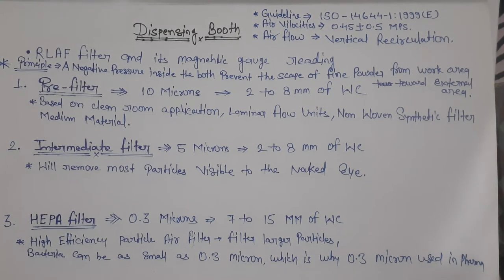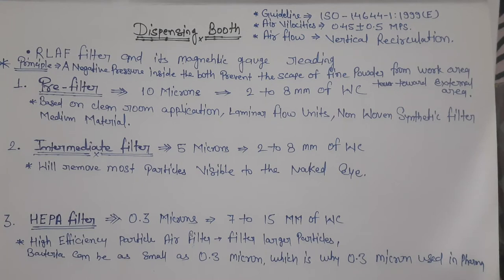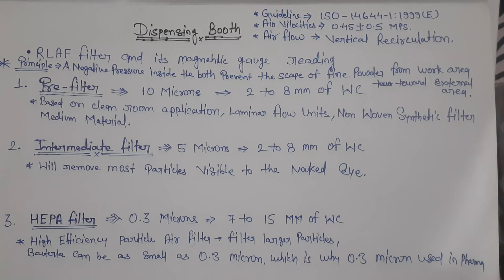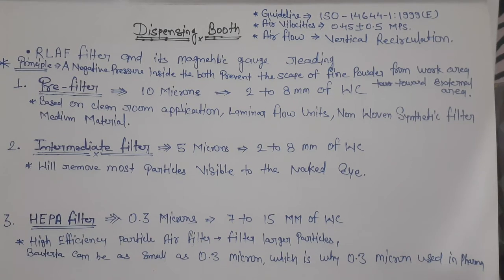Let's see about the first: pre-filter. Pre-filter size is 10 microns and manometric gauge reading is 2-8 mm of water column. This is based on clean room application, laminar flow unit, non-bobbin synthetic filter medium material. The second one is intermediate filter.